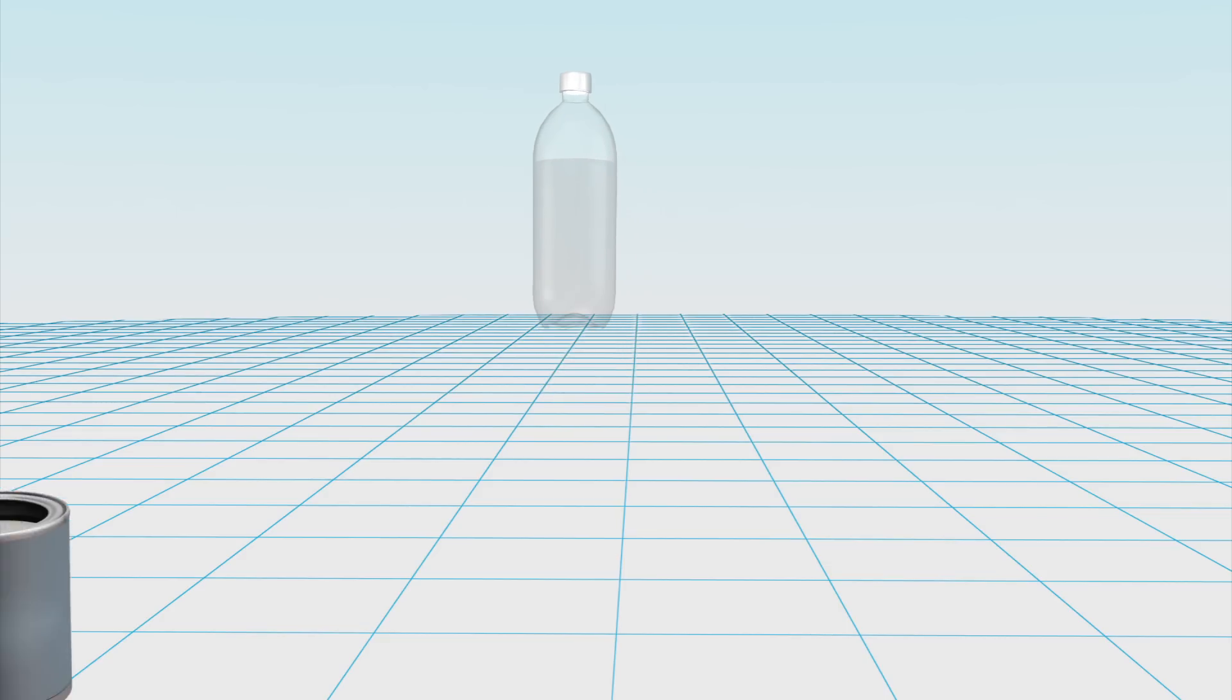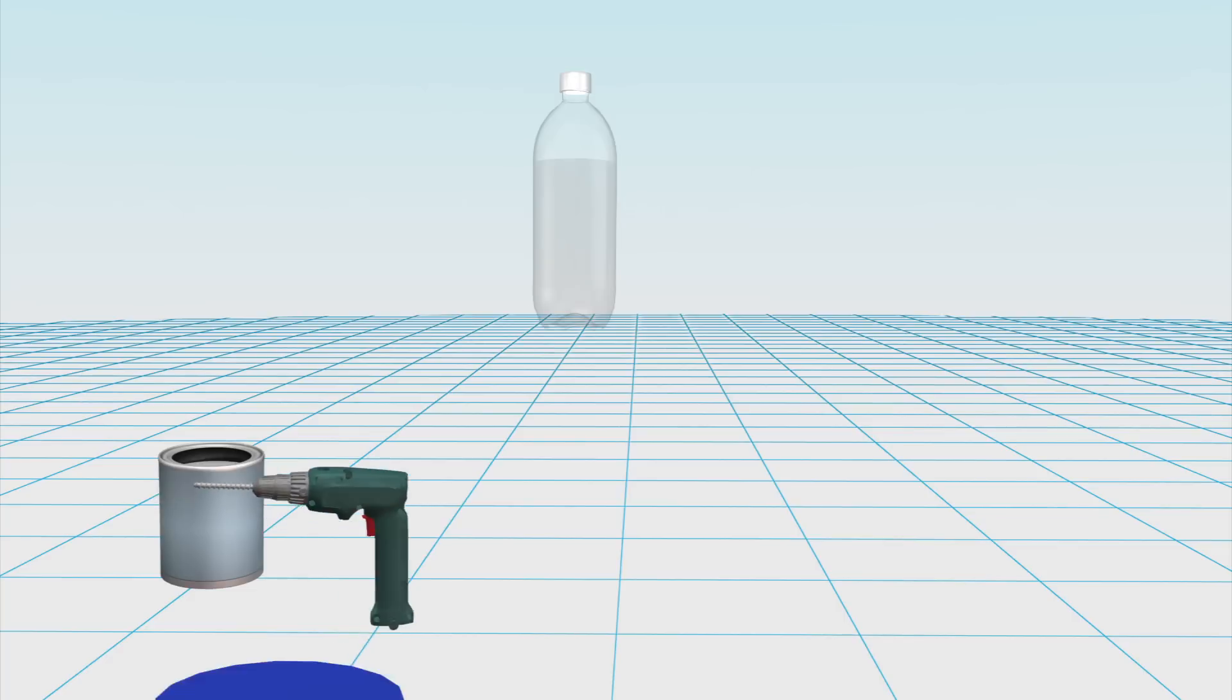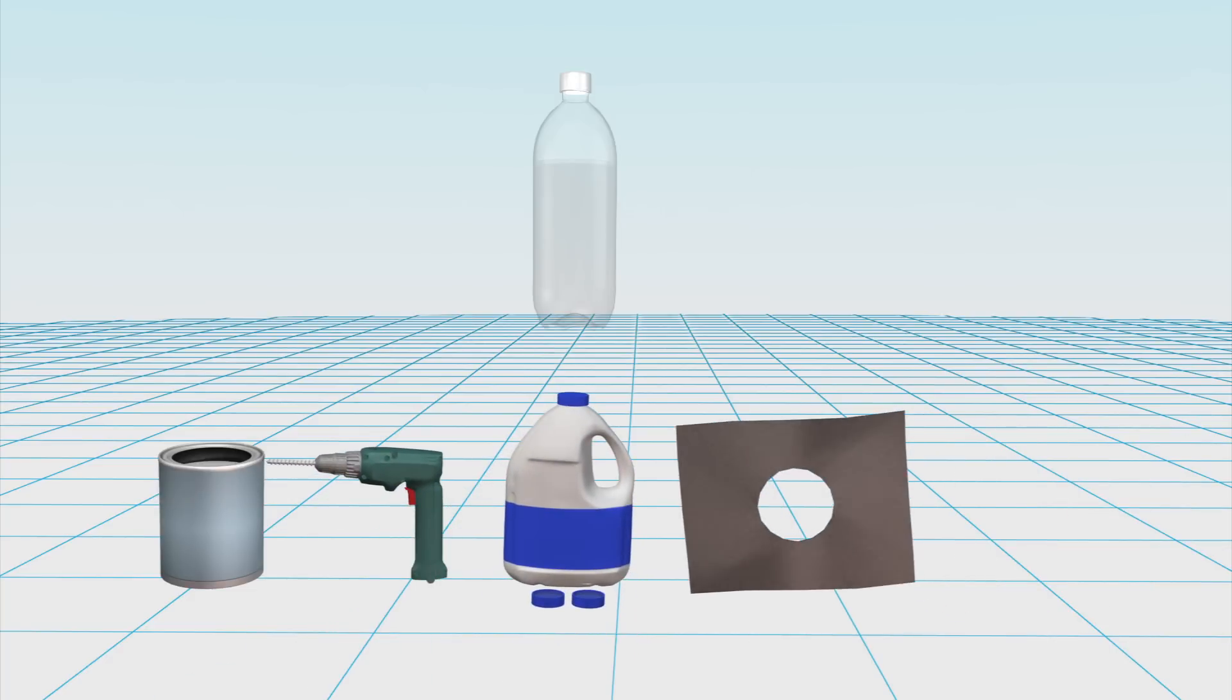He used an empty plastic water bottle, two cap folds of bleach, some aluminium foil, heavy duty scissors, a drill and polyester resin.